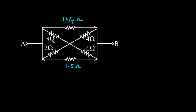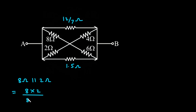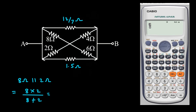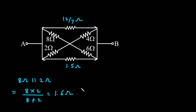Now, here we can see this 8 Ohm is in parallel with this 2 Ohm. So let's solve this — 8 Ohm parallel with 2 Ohm will be 8 into 2 divided by 8 plus 2, which gives 1.6 Ohm.